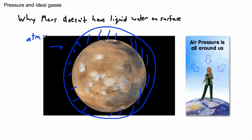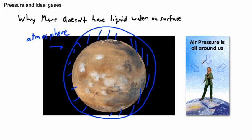What does an atmosphere do? There's an image of a giant lady over Earth — just trying to show that when you're on Earth, you feel air pressure. That's actually the atmosphere pushing on you: a force pushing on you over your own surface area. And that's good, because pushing on things with enough pressure keeps water liquid.